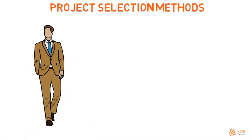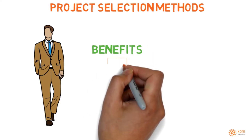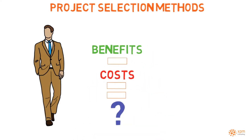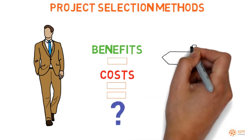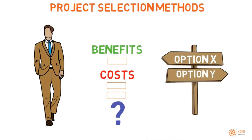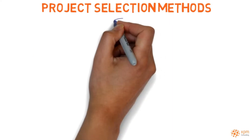Projects are initiated when someone with enough authority within the organization decides to mobilize resources for the project. To make such a decision, the organization must have concluded that the project is favorable and better than other available options. Sometimes this decision is based on an empirical analysis of the project. Other times, the organization adopts structured methods to identify, select, and prioritize projects.